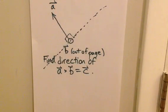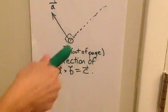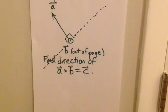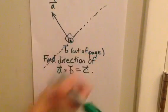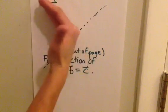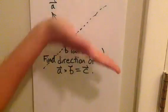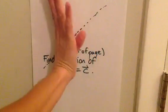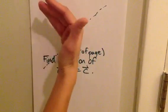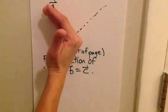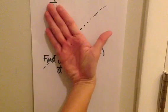So the only question is which way? Does C point this way, or does C point this way? To figure that out, we're going to use our right-hand rule. Remember, we put our fingers in the direction of A. Make sure you use your right hand, not your left. Our fingers go in the direction of A, and our palm points in the direction of B.